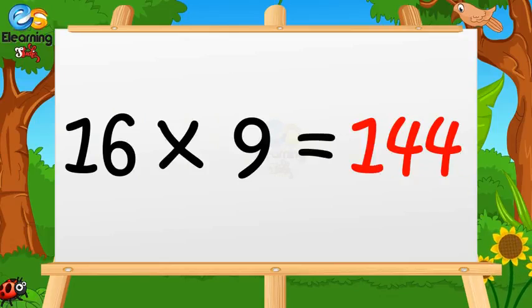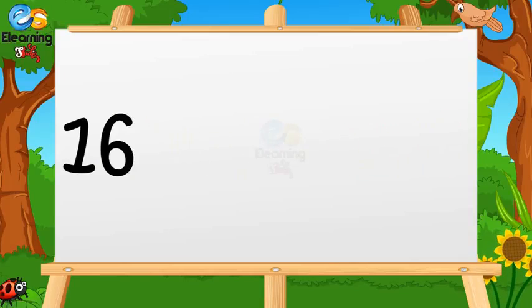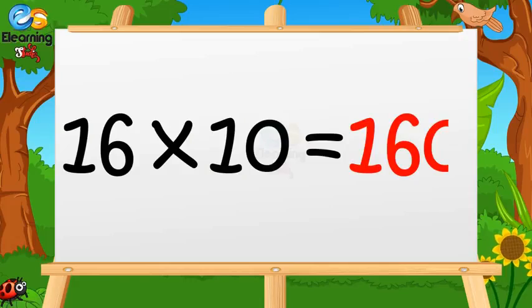Sixteen nines are hundred forty-four. 16 × 9 = 144. 16 × 10 = 160.